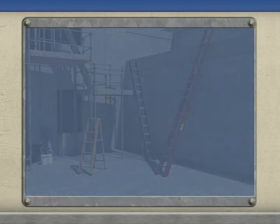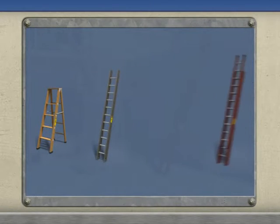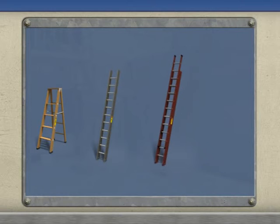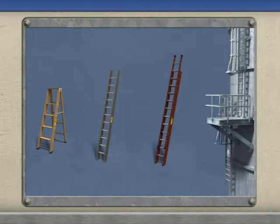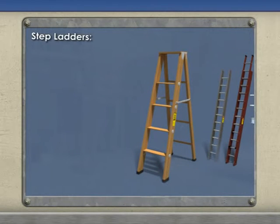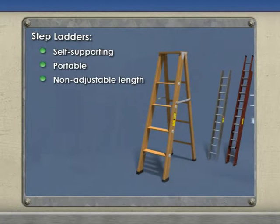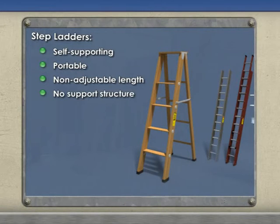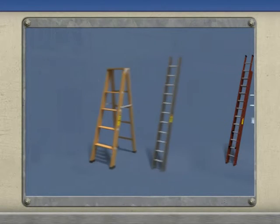Ladders come in a wide variety of types designed for various jobs. Generally, most ladders fit into one of four categories: step ladders, straight ladders, extension ladders, and fixed ladders. Step ladders are self-supporting portable ladders that are not adjustable in length. They are commonly used in areas where items need to be reached but there is no structure available to supply support.